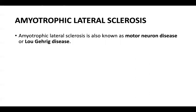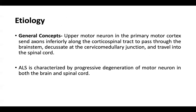Amyotrophic lateral sclerosis is also known as motor neuron disease or Lou Gehrig's disease. Regarding etiology, upper motor neurons are in the primary motor cortex and send axons inferiorly along the corticospinal tract, passing through the brain stem, decussating at the cervicomedullary junction, and traveling into the spinal cord.